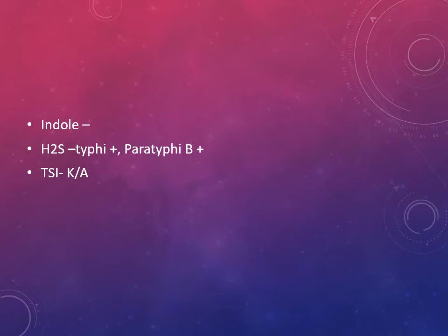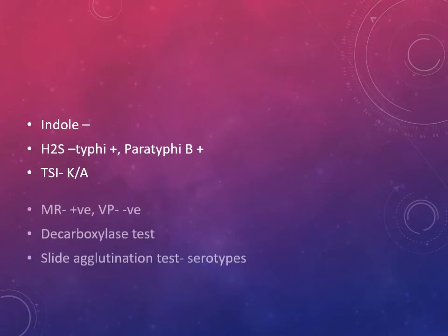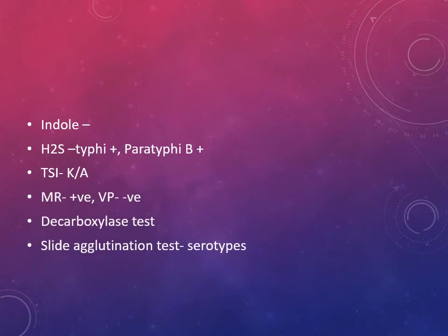On TSI we get an alkaline over acid reaction. MR is positive, VP is negative. We also perform the decarboxylase test, and finally to know which serotype it is, we do the slide agglutination test.